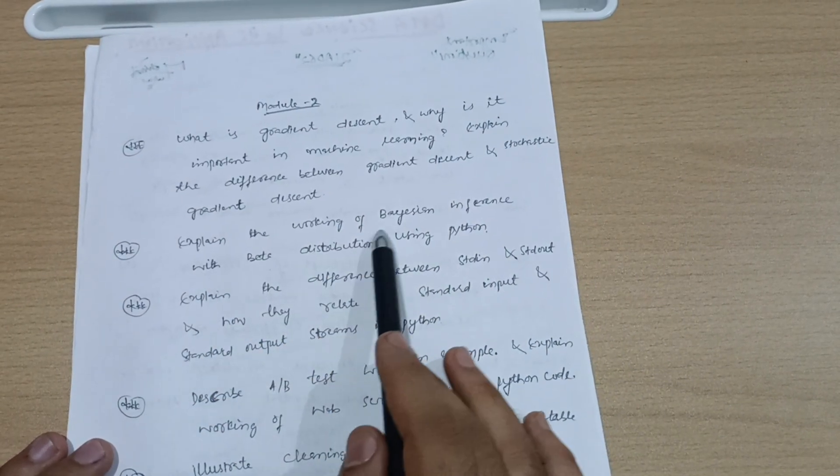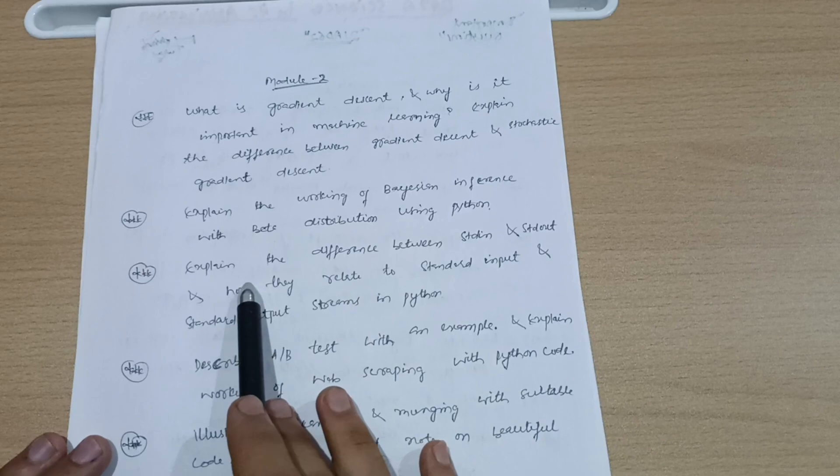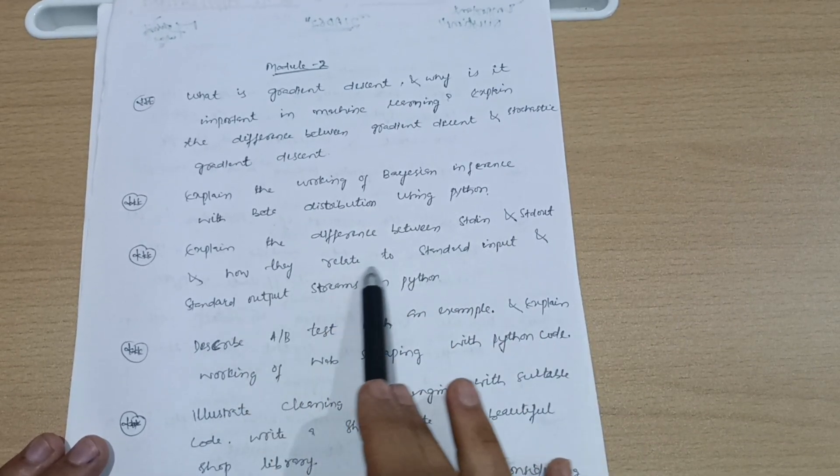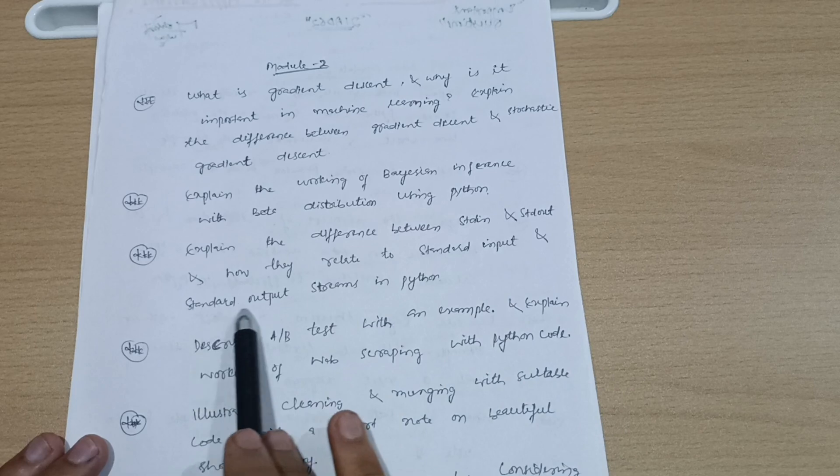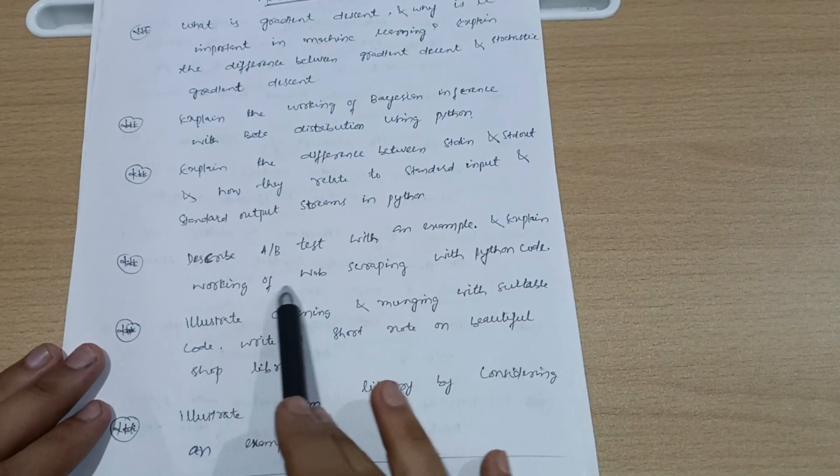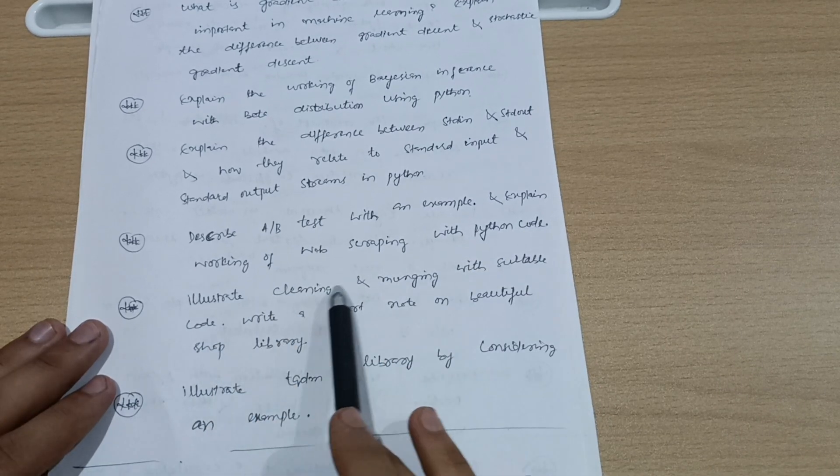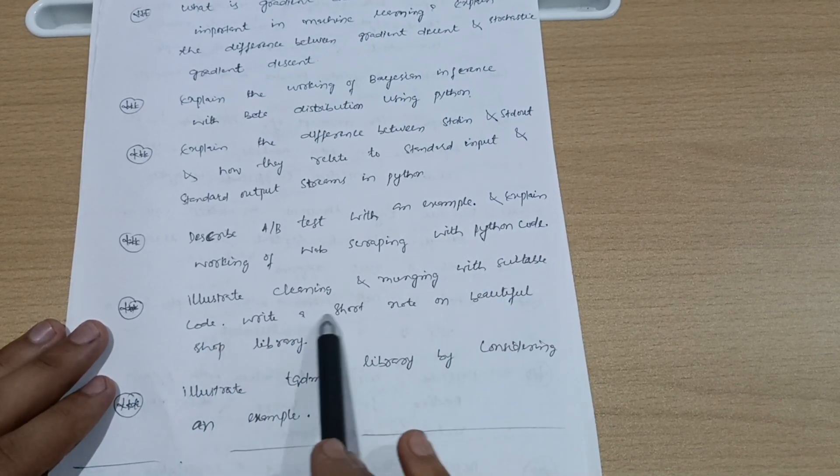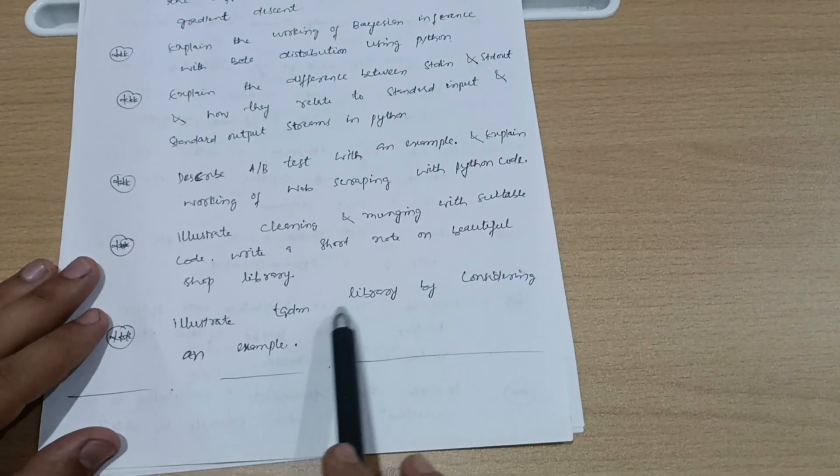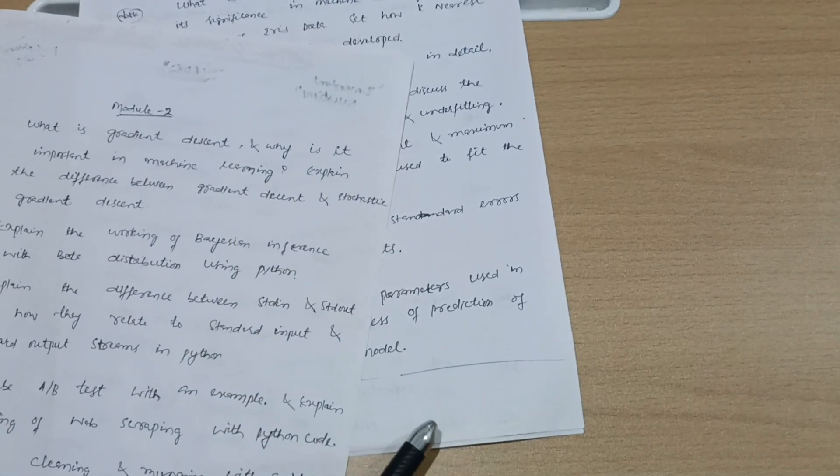Explain the working of Bayesian inference with beta distribution using Python. Explain the difference between standard input and standard output and how they relate to standard output streams in Python. Describe A/B test with an example. Explain the working of web scraping with Python code. Illustrate cleaning and munging with suitable code. Write a short note on Beautiful Soup library. Illustrate tqdm library by considering an example.